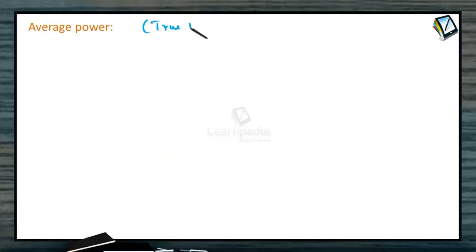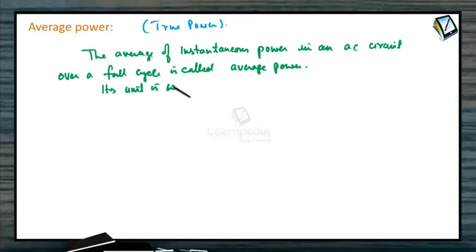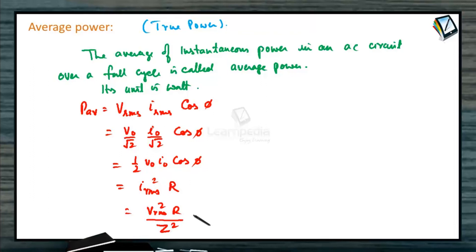Let us define average power. We can also call this as true power. The average of instantaneous power in an AC circuit over a full cycle is called average power. Remember its units is Watt. So power average we can write it as Vrms Irms into cos phi. Vrms can also be written as V0 by root 2. Irms we can write I0 by root 2 into cos phi. Or it can be written as half of V0 I0 cos phi. This can also be written as Irms square into R or Vrms square R divided by Z square, where Z is the impedance. So average power can be calculated by using any of the relations.